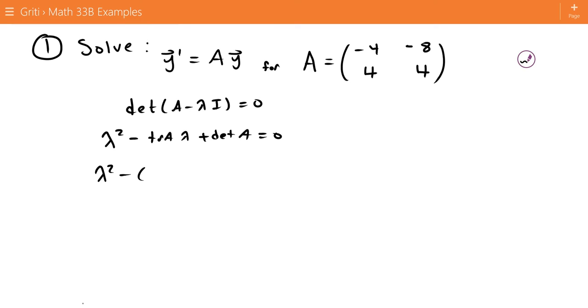The trace of A is just the sum of the diagonal entries, so negative 4 plus 4. And the determinant of A is going to be negative 4 times 4 minus 4 times negative 8. 4 minus 4 will go to 0, so we have lambda squared plus whatever this is.